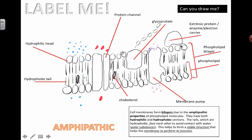Over here you can have another protein which can have many different functions. You can call it an extrinsic protein versus an intrinsic protein. An extrinsic protein is just a protein that's attached to the edge of a cell membrane or it's only partially embedded inside the membrane — it doesn't go all the way through. So this big guy here with a little curvy nose is not an extrinsic protein. It could be an enzyme, it could be an electron carrier. There's all kinds of different functions that it could be. This is kind of a bonus protein just to show off that you know how to draw these things really well.